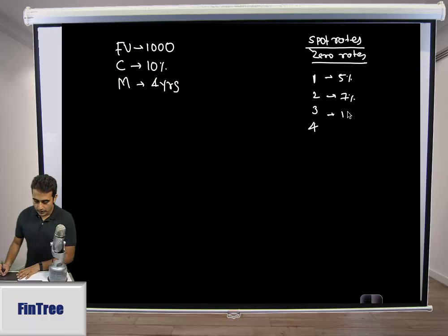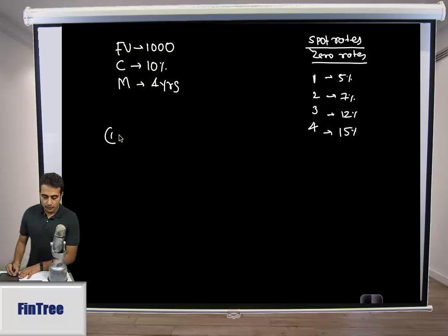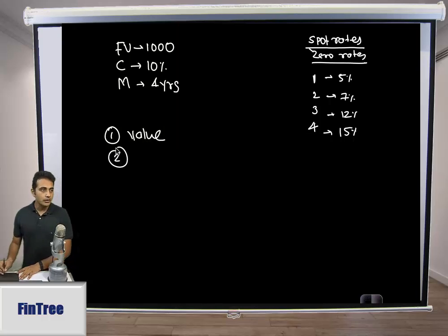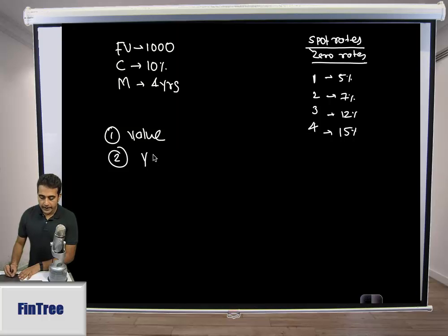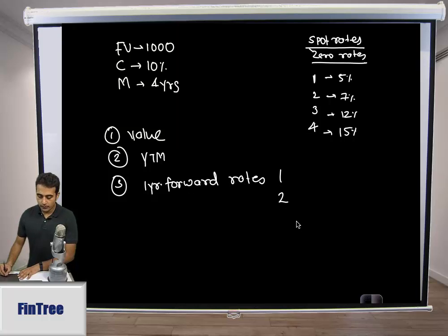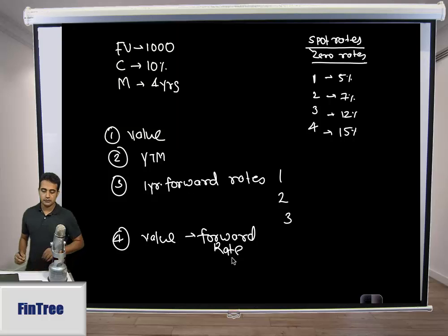Based on this data, we have four questions. Question 1: Find the value of the bond. Question 2: Find the YTM, yield to maturity, on this bond. Question 3: Find the one-year forward rates - one year from now, two years from now, and three years from now. Question 4: Calculate the value of the bond using forward rates.